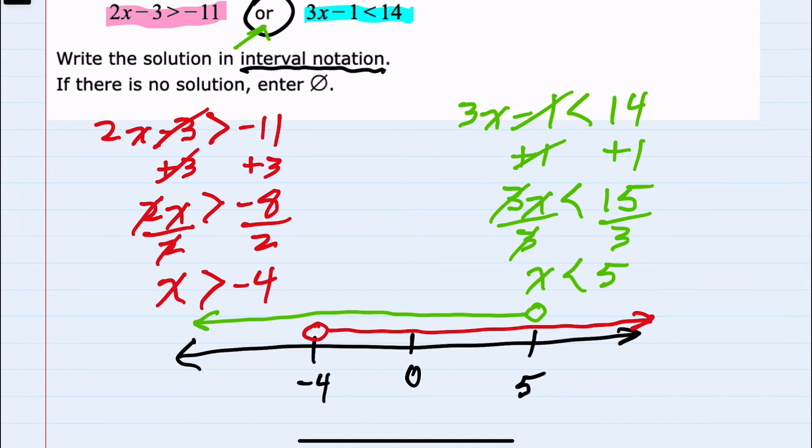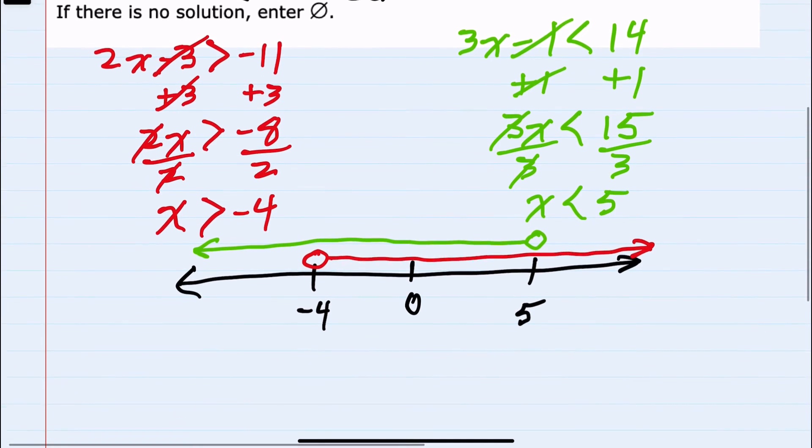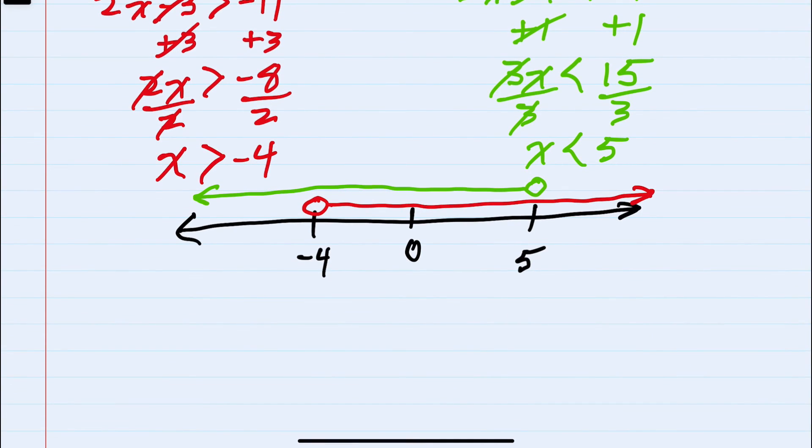And since the green one goes everywhere to the left, the red one everywhere to the right, our solution in interval notation is going to be everywhere, all real numbers. In interval notation, this would be negative infinity to positive infinity.